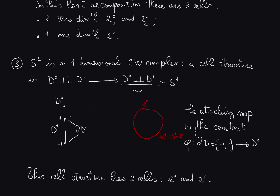What are the cells in this decomposition? There are just two cells. One is the image of D0, which is the point E0. Then there is one one-cell, which is the complement of that point in the circle — the image of the interior of D1.